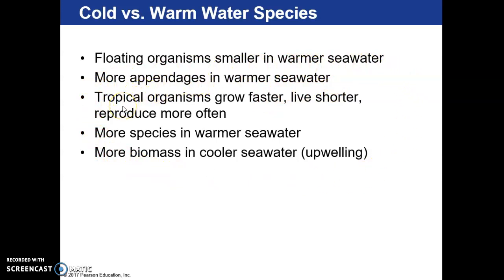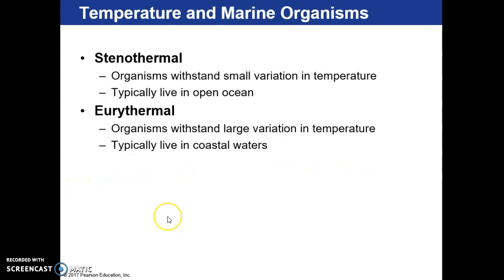Floating organisms are smaller in warmer seawater. Tropical organisms grow faster but live shorter lives, so they reproduce more often. There are more species in warmer seawater but more biomass in cooler seawater — that's why upwelling is such a big deal. We have two types of creatures based on temperature tolerance: stenothermal organisms withstand only a small variation, while eurythermal organisms can withstand a large variation. Eurythermal creatures typically live in coastal waters; stenothermal in the open ocean.